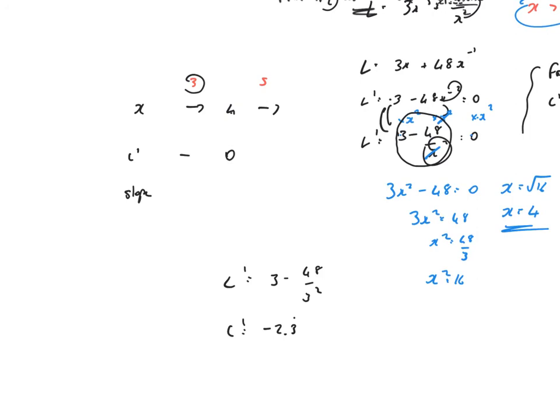Now, let's investigate what happens when I put in 5. That's going to be L dashed equals 3 minus 48 over 5 squared. That's a positive result of 1.08. We can see clearly that is a minimum turning point at x equals 4.